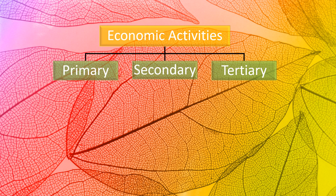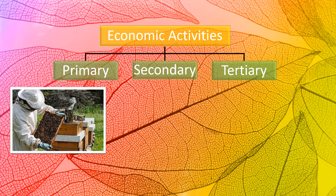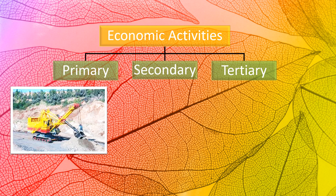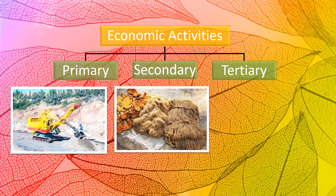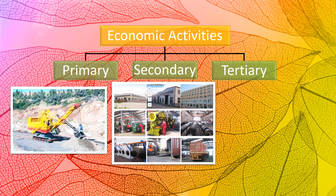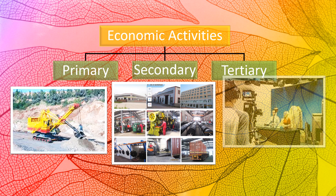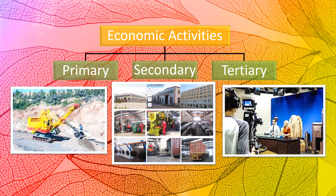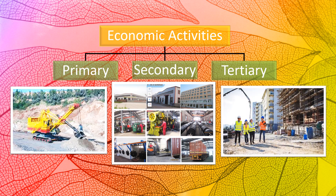Some examples of primary occupations are beekeeping and extracting iron ore. Examples of secondary occupations include coir and rope making, jaggery making, and producing blades of the plough. Some examples of the tertiary sector are television broadcasting, construction, teaching, driving buses, and providing lodging and boarding facilities.